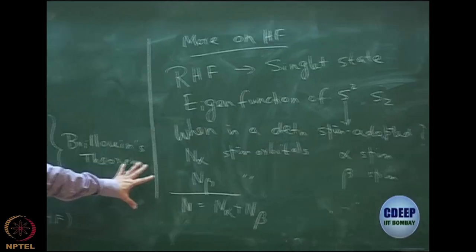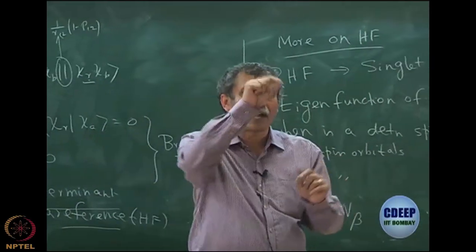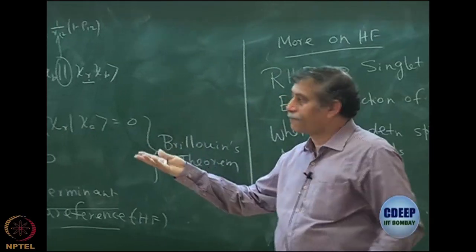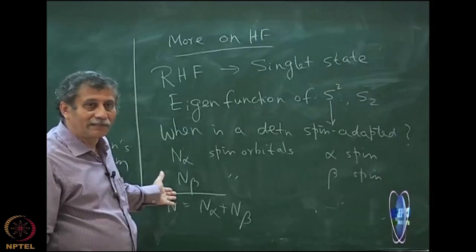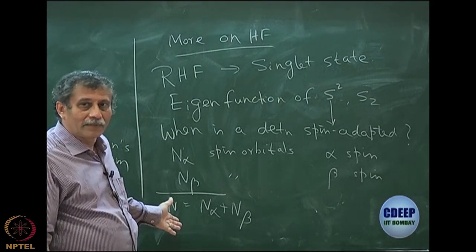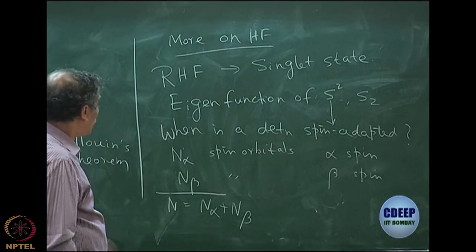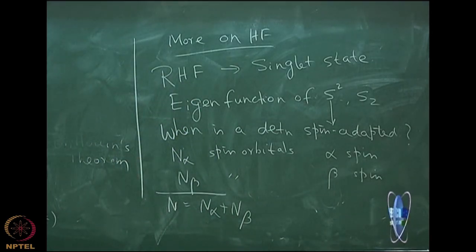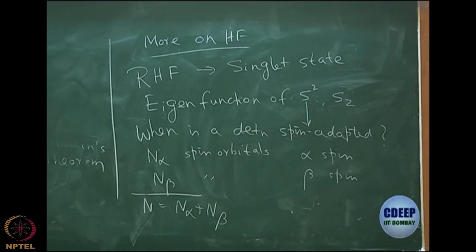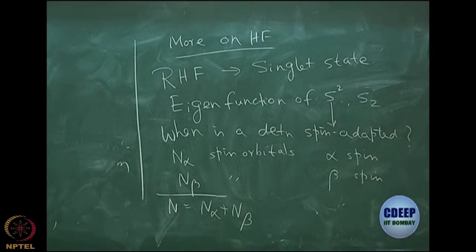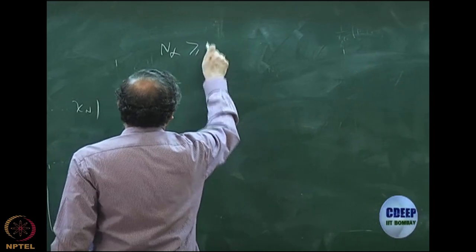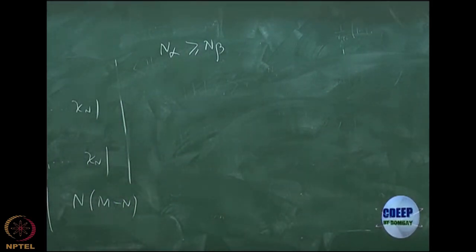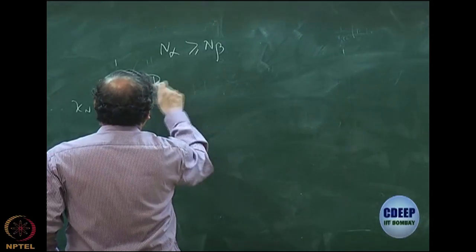This is a very general statement: in a determinant with chi-1, chi-2 to chi-n, I categorize the n spin orbitals as some with alpha spin and some with beta spin. For RHF, n-alpha equals n-beta, each being n/2. In general, I can have n-alpha alpha spins and n-beta beta spins. Then there is a theorem: let us assume n-alpha is greater than or equal to n-beta.